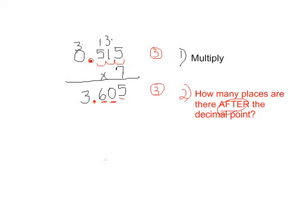And then I will put the decimal point. So therefore the answer then to 7 times 515 thousandths is 3 and 605 thousandths. Notice that we began with 3 places after the decimal point, and when we came down to our answer, we still have 3 places after the decimal point.